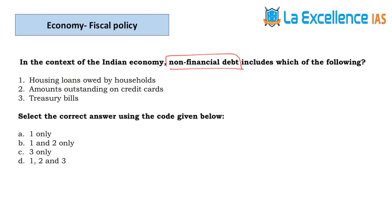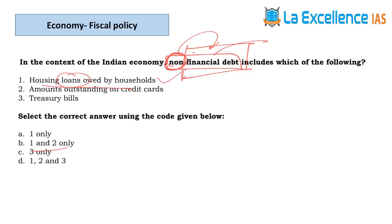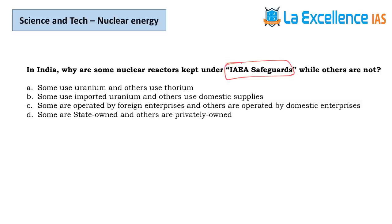The next question is about non-financial debt. Financial debt involves trading in financial markets; non-financial debt is money not in circulation in financial terms. Statement 1 — housing loans owed by households; the amount is not in financial market circulation, so correct. Statement 2 — amount outstanding on credit cards; again not in financial circulation, so correct. Statement 3 — treasury bills; this amount held by government is also not in direct circulation. Answer is D.